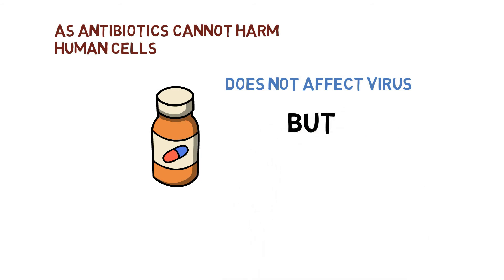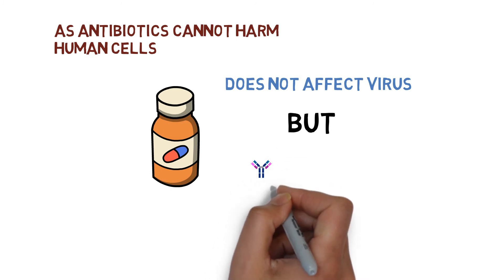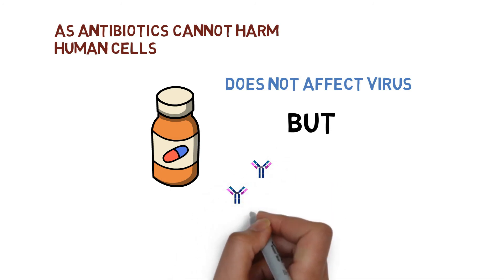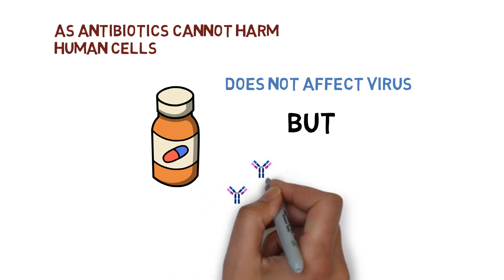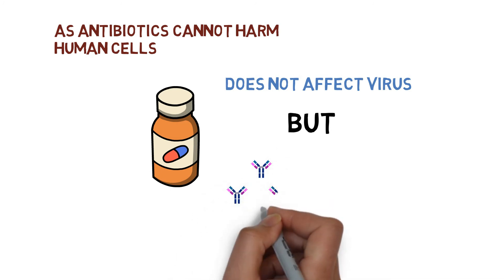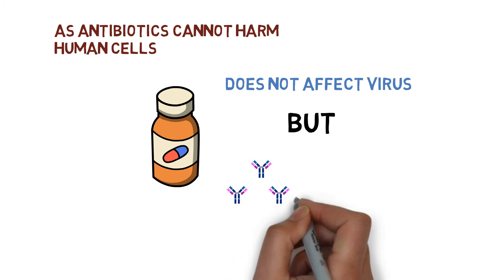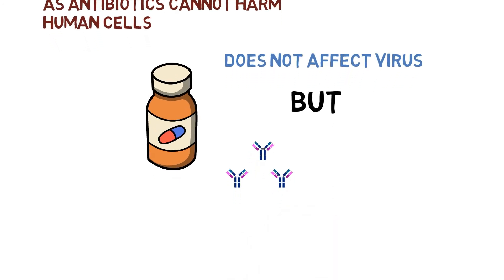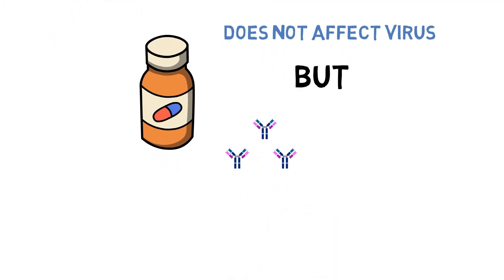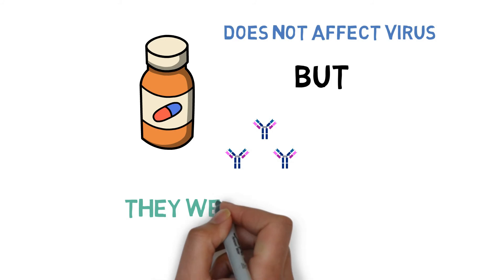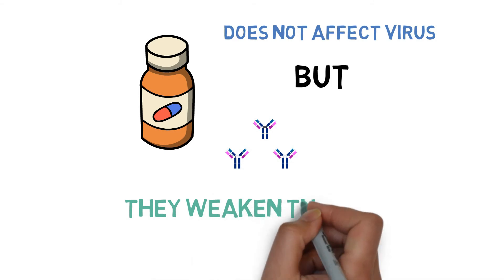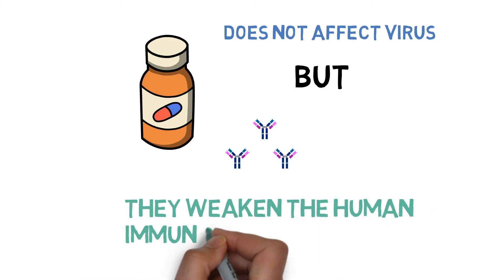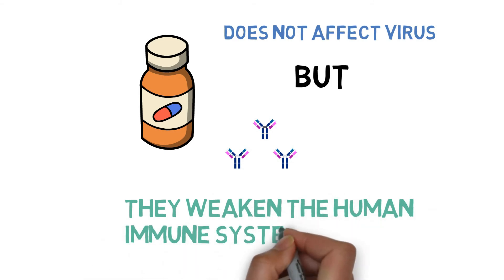During a viral infection, taking antibiotics can actually weaken the immune system because they attack the natural flora of the body, killing the resident bacteria that are helpful for maintaining immunity.